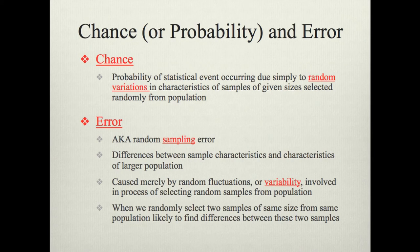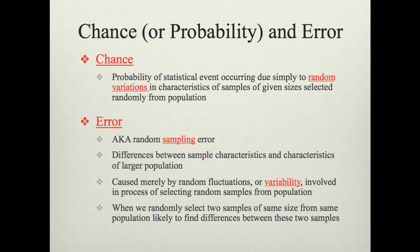Error can be caused by any random fluctuation involved in selecting random samples from the population. When we randomly select two samples of the same size from the same population, we are still likely to find differences between them, because no sample is a perfect representation of the population. This notion of sampling error is critical in understanding NHST. As the sample size gets larger and larger, it more closely approximates the population, and any descriptive statistic — for example the mean — becomes closer to the mean of the population.